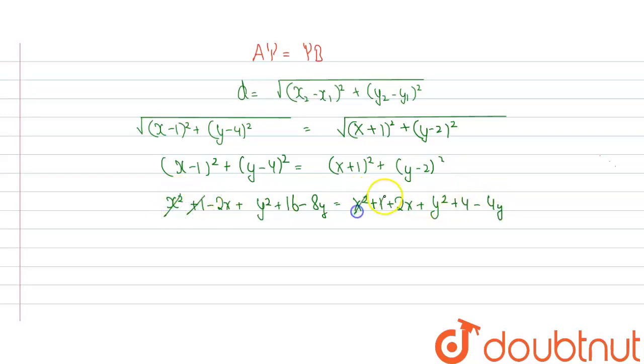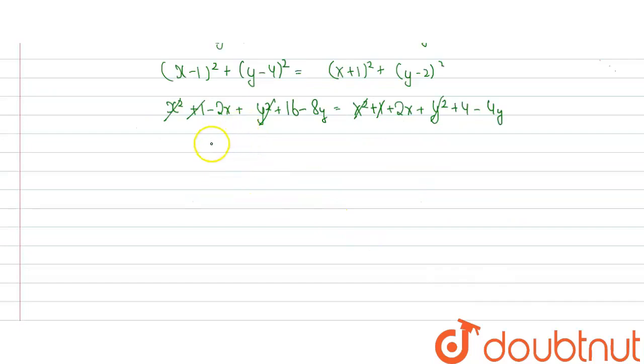x square plus 1 will cancel out x square plus 1. y square will cancel out y square. So left terms will be minus 2x minus 8y plus 16 is equal to 2x minus 4y plus 4.